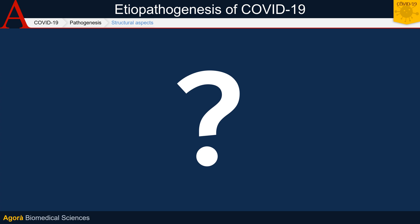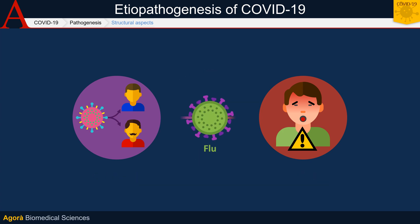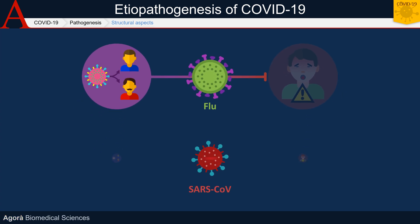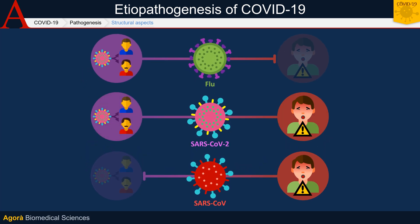One of the most urgent questions that the scientific community is trying to answer concerns the reason for such contagiousness and, at the same time, the ability of the virus to determine severe clinical pictures in a relevant number of cases. This is a fairly innovative feature in the world of respiratory viruses. The common flu, although as contagious as SARS-CoV-2, rarely leads to severe clinical pictures. On the contrary, the SARS virus, although it caused a more severe pneumonia, was also less contagious. But how can SARS-CoV-2 have both?